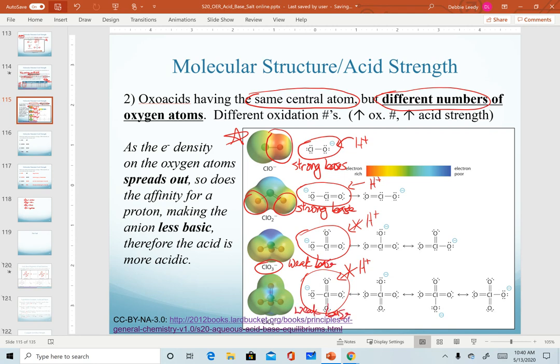We can tell from the strength of the bases that HClO and HClO2 are weak acids because they have relatively strong bases. And HClO3 and HClO4 would be considered strong acids. They have fairly weak bases.